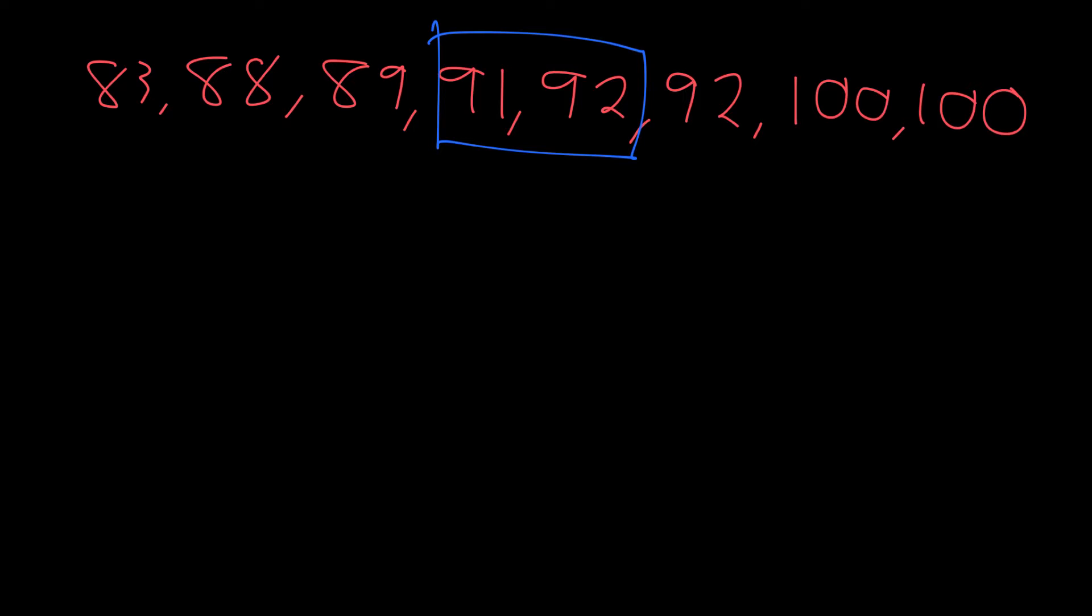So the median is 91.5. Actually you don't need to find the median, but you'd do that if it was a box and whisker plot. But you know that this is one half, and this is the other half of the numbers.